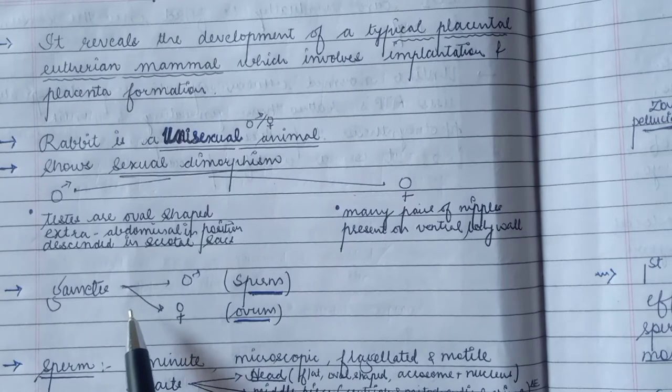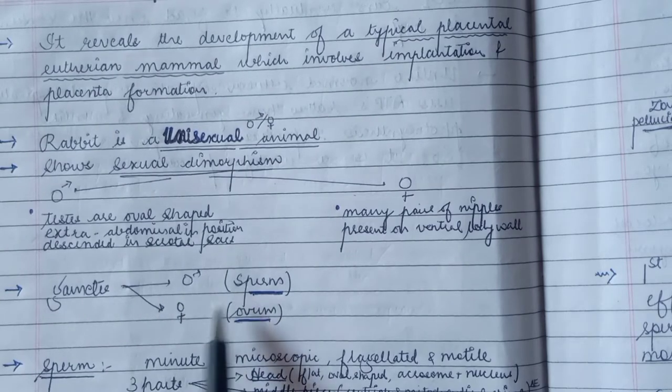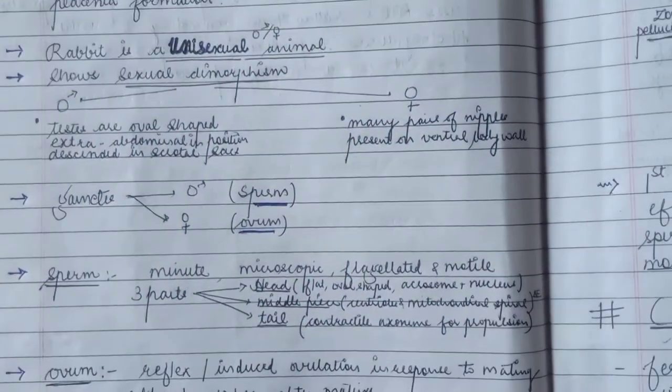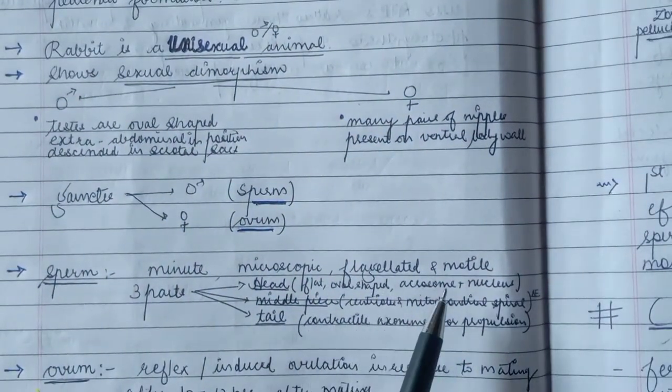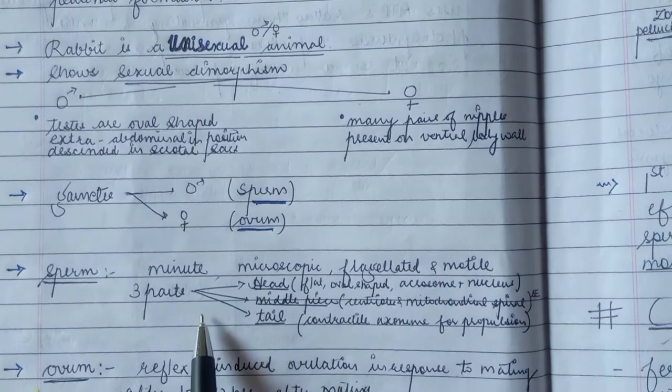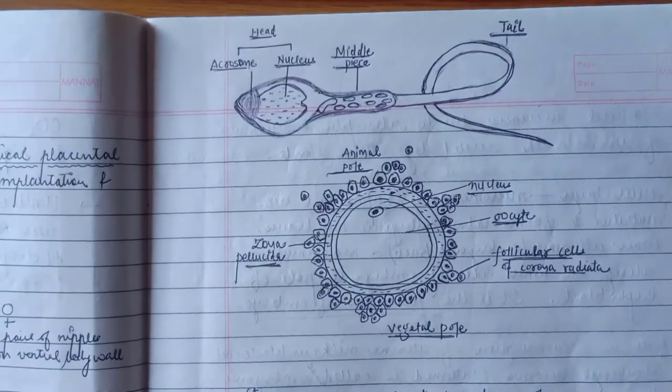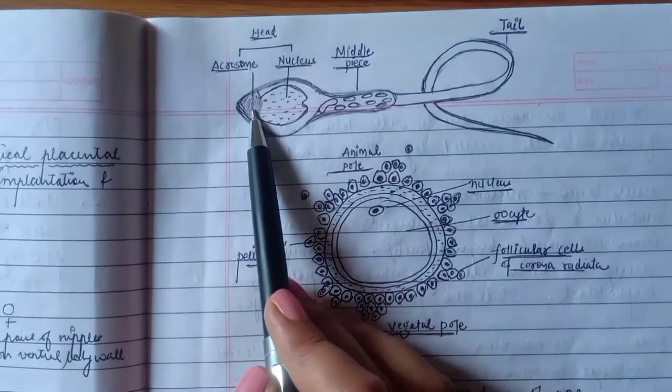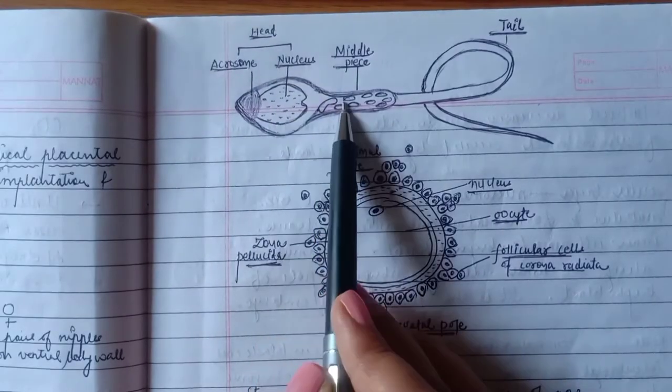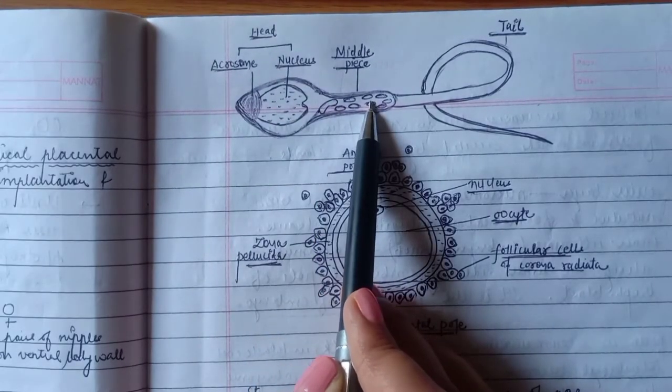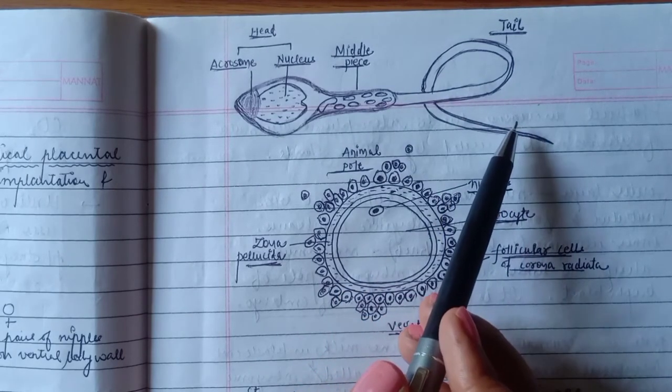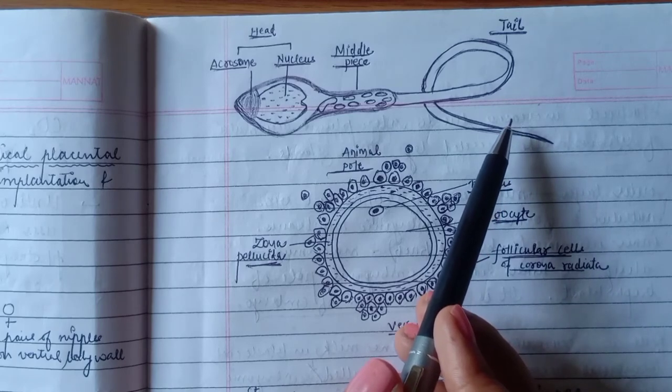Now we will talk about gametes. Gametes have sperm in male and in female ovum. Sperm is a typical sperm - minute, microscopic, flagellated and motile obviously. There are three parts: head, middle piece and tail. This is the sperm from rabbit. Let us have a look. It is a sperm of rabbit, like a normal sperm. There is a head where there is acrosome. There is a nucleus and a middle piece where mitochondria and centrioles are present. After that, there is tail that acts as an axoneme with contractile mechanism for propulsion.